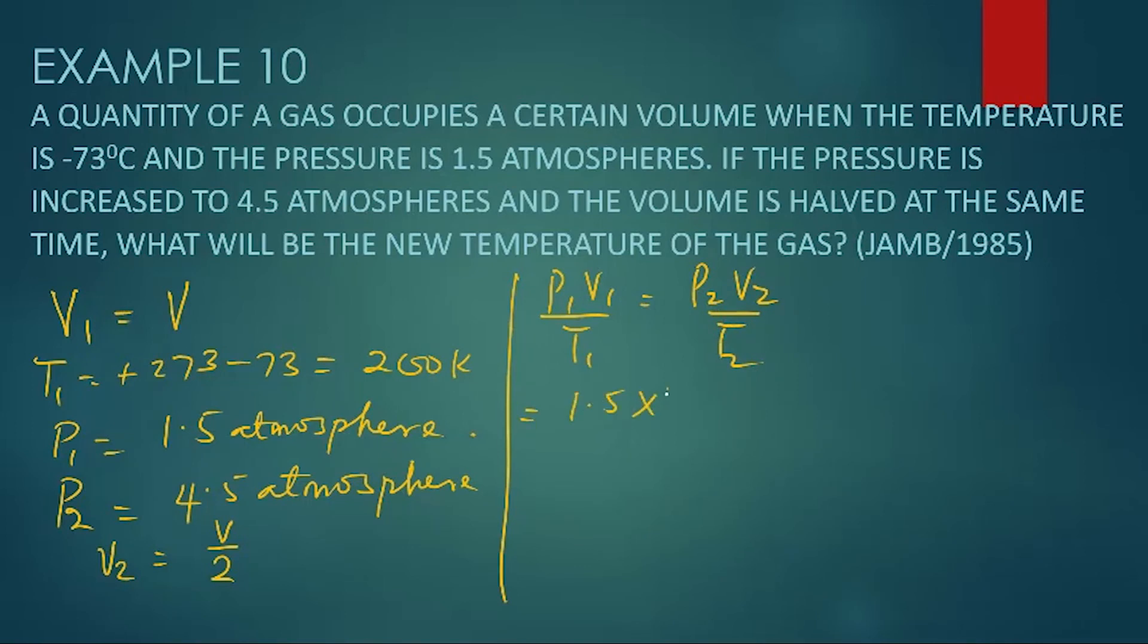We have 1.5 times V1 is V over T1, which is 200. We give you P2, which is 4.5 times V2, which is V over 2, everything over T2. You can write it that way.